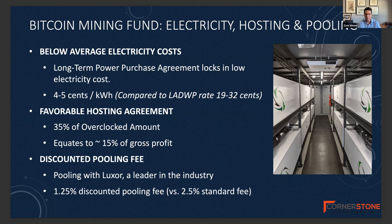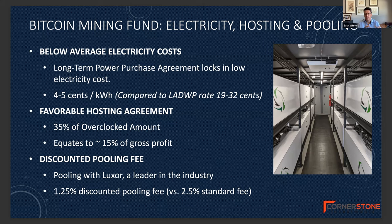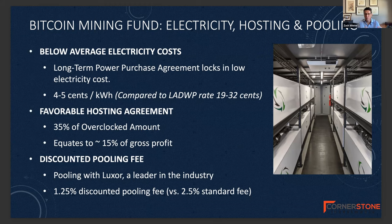We've also negotiated a discount with the pooling company. As I mentioned, every 10 minutes, only one Bitcoin mining computer is awarded the Bitcoin subsidy. Because only one computer is awarded every 10 minutes, Bitcoin miners pool their resources into Bitcoin mining pools — that way, we're ensured to get Bitcoin every day. We're looking at pooling with an industry leader called Luxor, and we've negotiated a 50% discount. Each computer contributes a certain amount of energy or hash rate, and the amount of Bitcoin received is pro rata based on the amount of hash rate contributed to the pool.